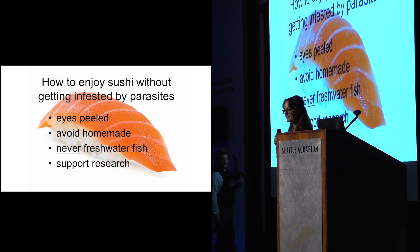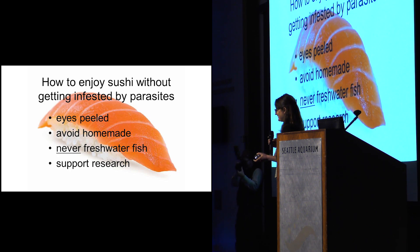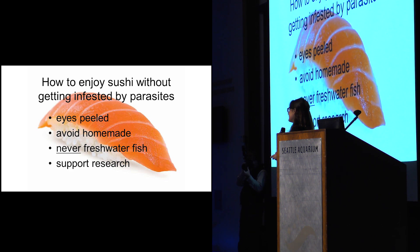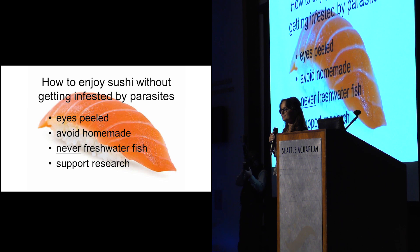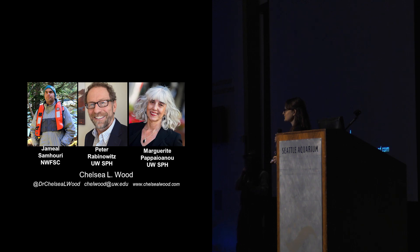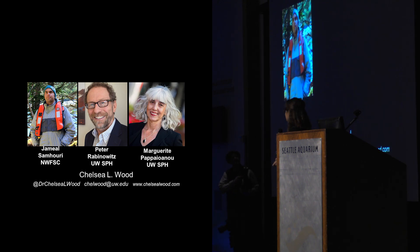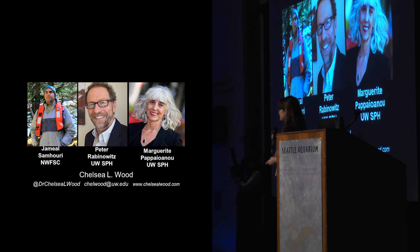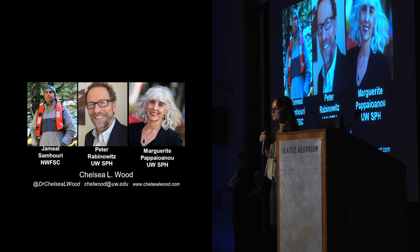And finally, support research on this topic. My colleagues and I just started a project to figure out what menu items present the greatest risk of Anisakiasis to folks eating sushi right here in the Seattle metro area. I teamed up with Jamil Samhouri at the Northwest Fisheries Science Center, Peter Rabinowitz at the UW School of Public Health, and Marguerite Papaioanou, also at the UW School of Public Health. Together, we're trying to find ways to reduce Anisakiasis risk for people who eat sushi in Seattle.